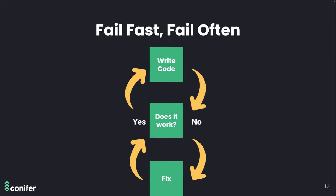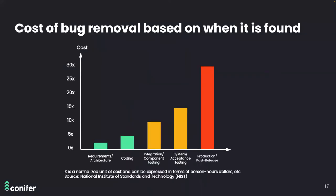This type of environment has a hidden cost in the form of developer time, stress, and overall productivity. According to research by the National Institute of Standards and Technology, the cost of software bug removal increases depending on where the bug is found. If a bug is found at the requirement, architecture, or coding stages, it is still relatively cheap to fix. But as you move to integration testing or system testing stages, the cost increases dramatically. If a bug makes it to production, it can cost up to 30 times more to remove.